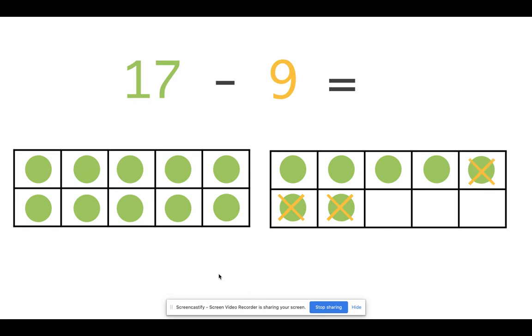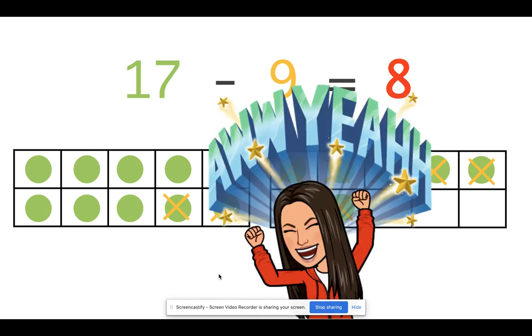1, 2, 3, 4, 5, 6, 7, 8, 9. How many are you left with? My goodness, you're so smart. 17 minus 9 equals 8. Oh yeah, you got it.